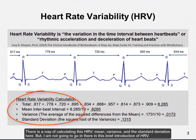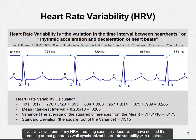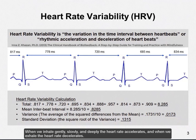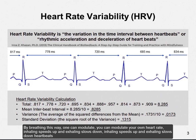There is a way of calculating HRV — mean, variance, standard deviation — but I am not going to go into that in this brief introduction. If you have viewed one of my HRV breathing exercise videos, you would have noticed that breathing at rest generates well-synchronized heart rate variability with respiration. When we inhale gently, slowly, and deeply, the heart rate accelerates, and when we exhale, the heart rate decelerates. This acceleration and deceleration in response to controlled breathing creates the heart rate variability cycle. By breathing this way, one can modulate their own heart rate — inhaling speeds up and exhaling slows down the heartbeats.